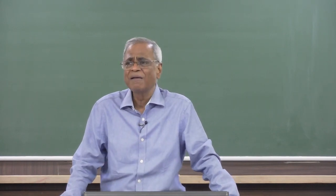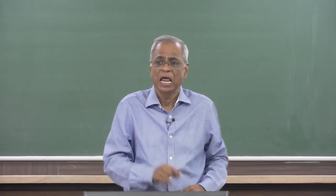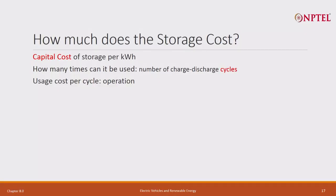When you buy a battery you charge and discharge — you keep charging, discharging. Every time you charge and discharge the battery, battery life goes down a bit. Battery cannot be charged and discharged forever; its capacity goes down slightly. So you can do only so many charge-discharge cycles.